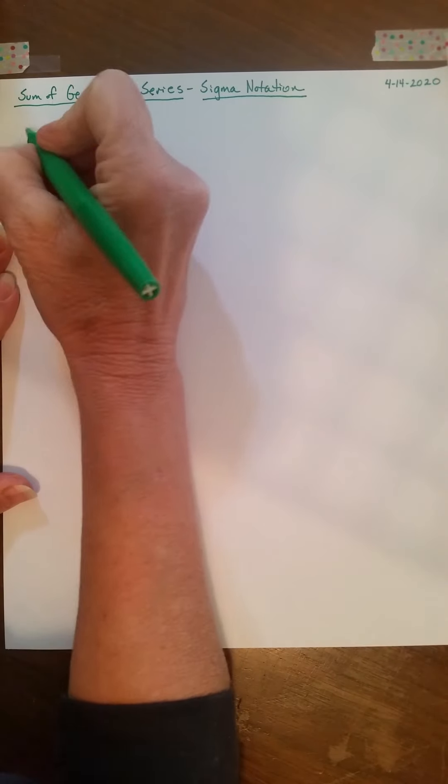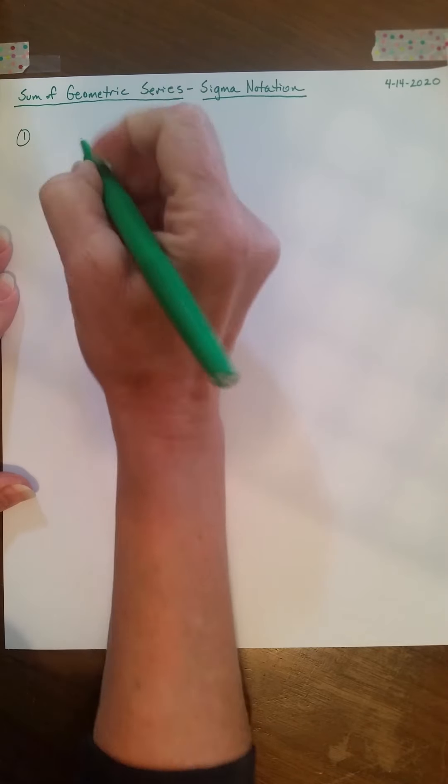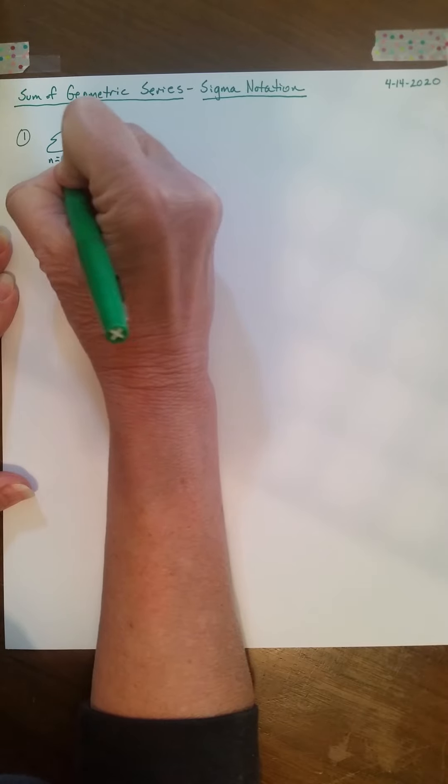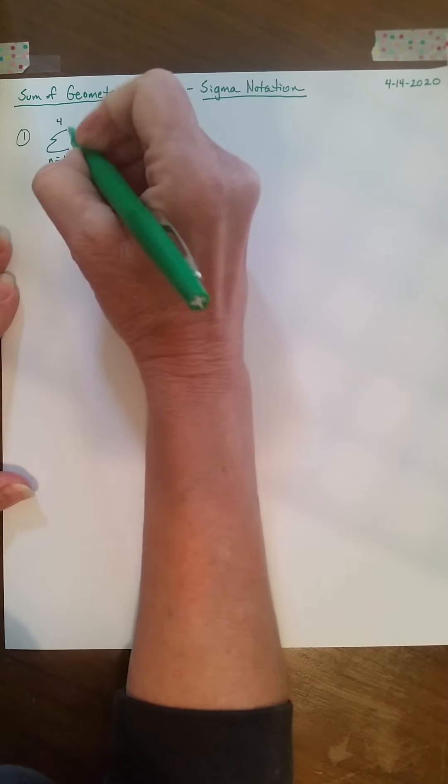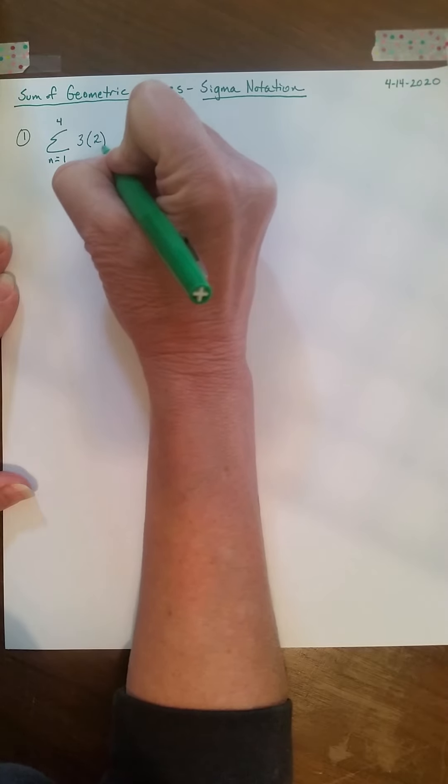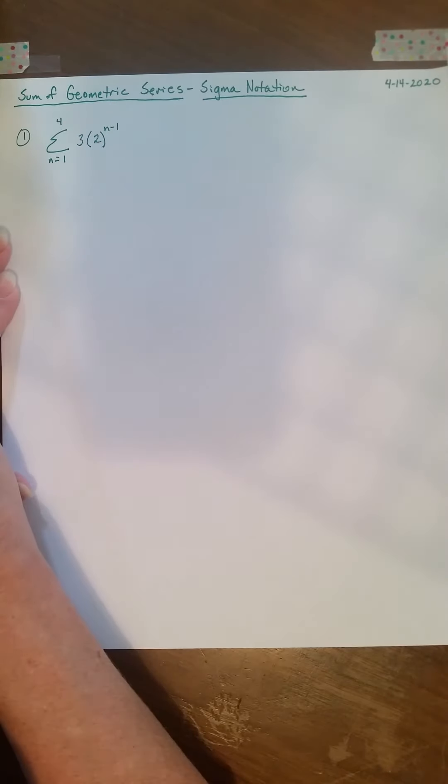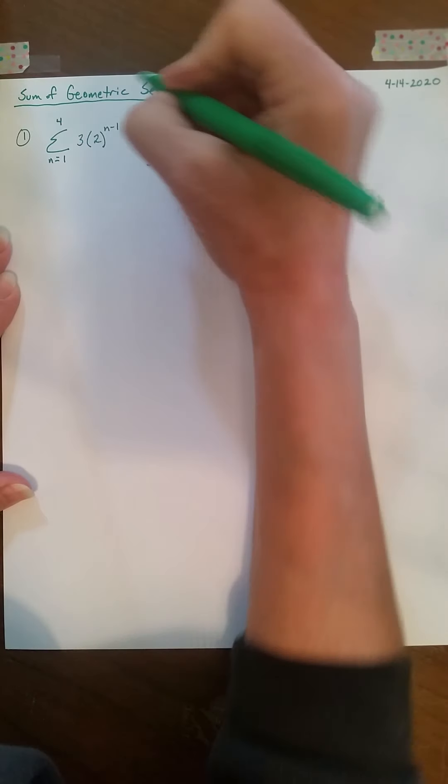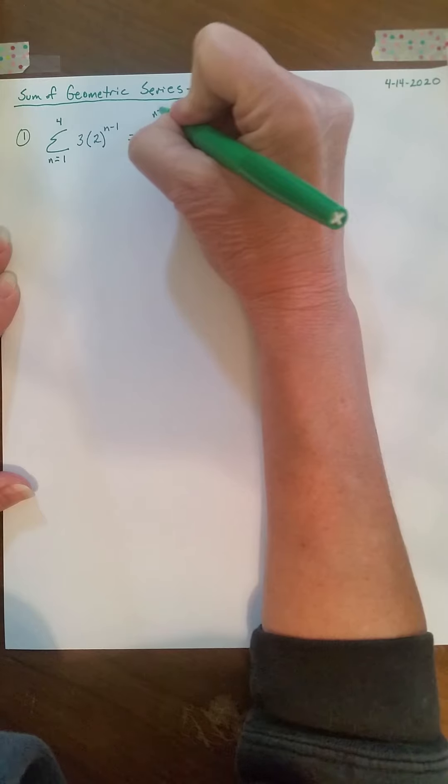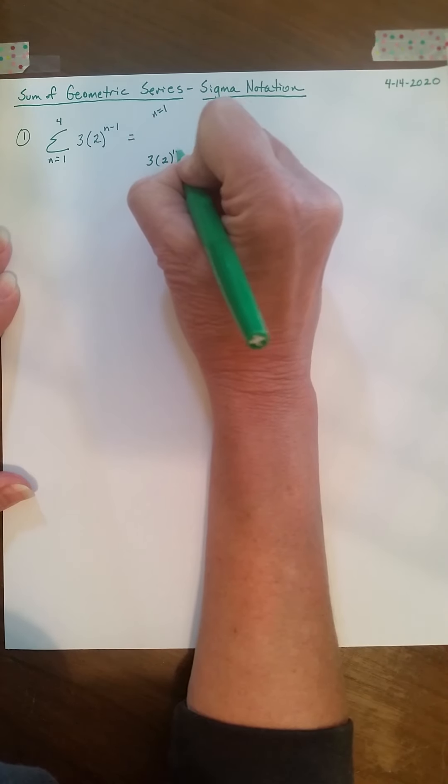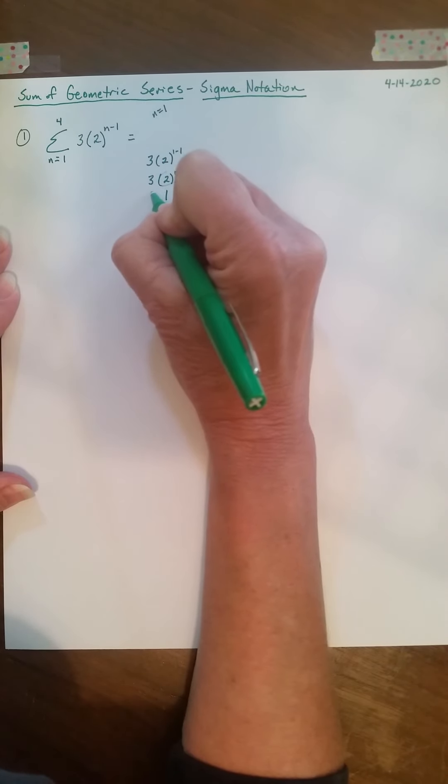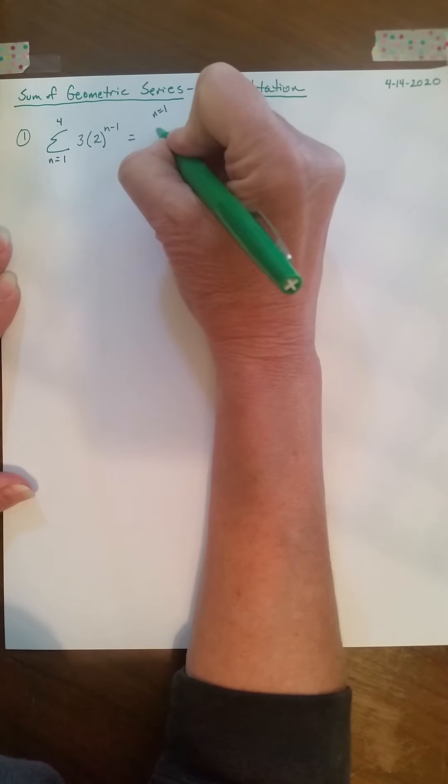Okay, so the sum of a geometric series using sigma notation. Remember sigma notation. So number one, I'm just going to do the sum from n equals 1 to 4 of 3 times 2 to the n minus 1. Okay, so now, if I put in n equals 1, I have 3 times 2. So I'm putting in, I'm starting with my lower limit, n equals 1. So I have 3 times 2 to the 1 minus 1. Well, that's 3 times 2 to the 0. Remember that anything to the 0 power is 1. So that's just 3 times 1. So my first term is 3.